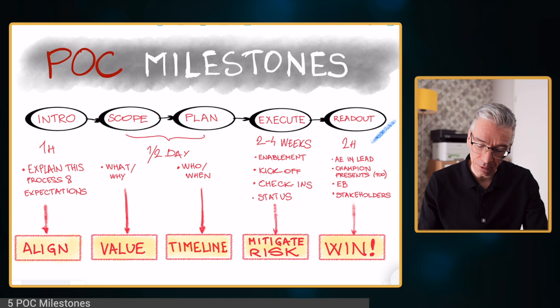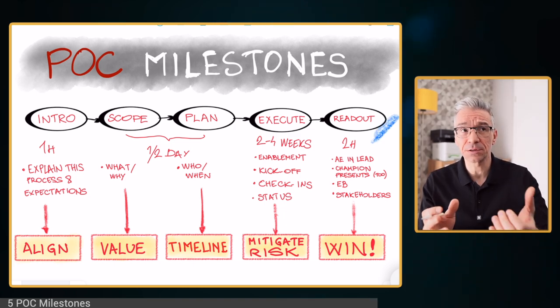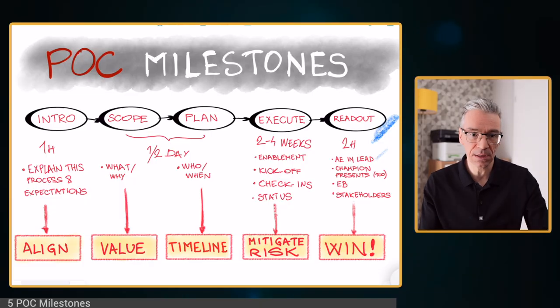After the execution — after we've delivered everything agreed in the POC — we come to the last milestone, which is the readout. Usually it's a meeting that lasts about two hours. You want to do this with a customer face-to-face, looking them in the eyes, maybe having lunch afterward to get informal feedback. The account executive is in the lead here — they are going to be the ones presenting the POC readout document, and in this video I'm going to talk about the content of that document.